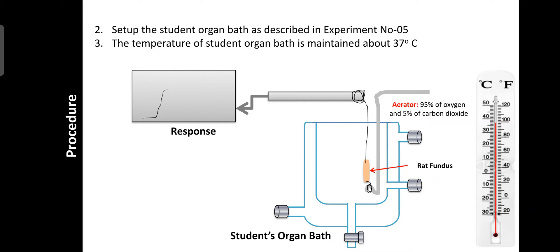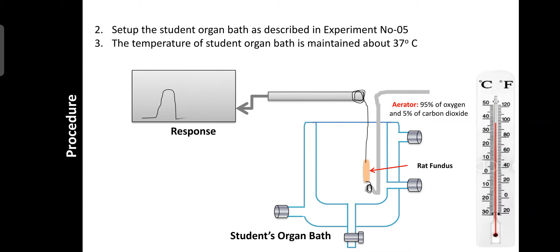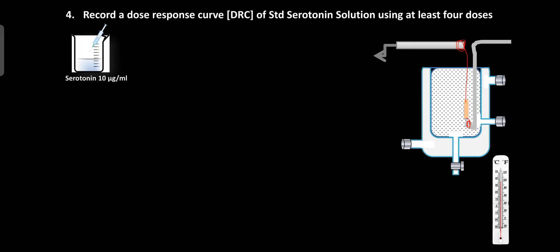The assembly is set up as described in experiment number 5 and the temperature of the organ bath is maintained at 37 degrees centigrade with the help of the heater and thermostat. After isolation, allow equilibration for about 30 to 45 minutes, then record the dose-response curve of standard serotonin solution using at least 4 doses. First, record the baseline without any drug for 30 seconds.